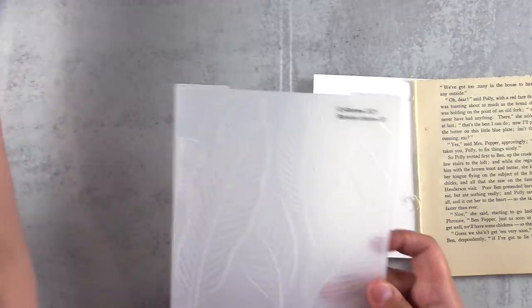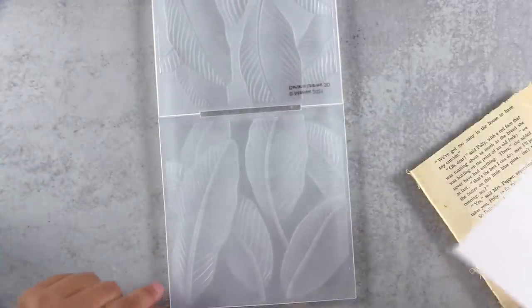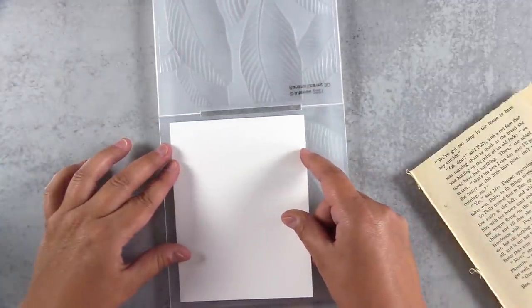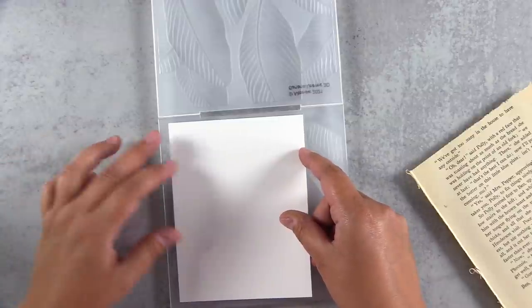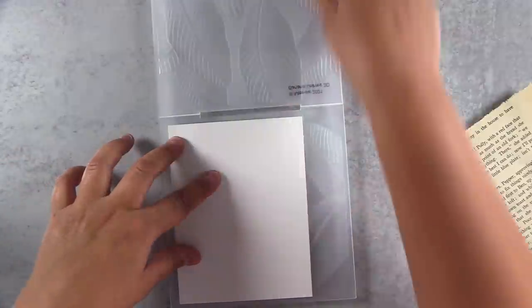I'm going to start with the Banana Leaves 3D embossing folder and I have a piece of Savoy letterpress paper here. When I'm using a 3D embossing folder like this, sometimes I find that Neenah Classic Crest can crack a little bit.